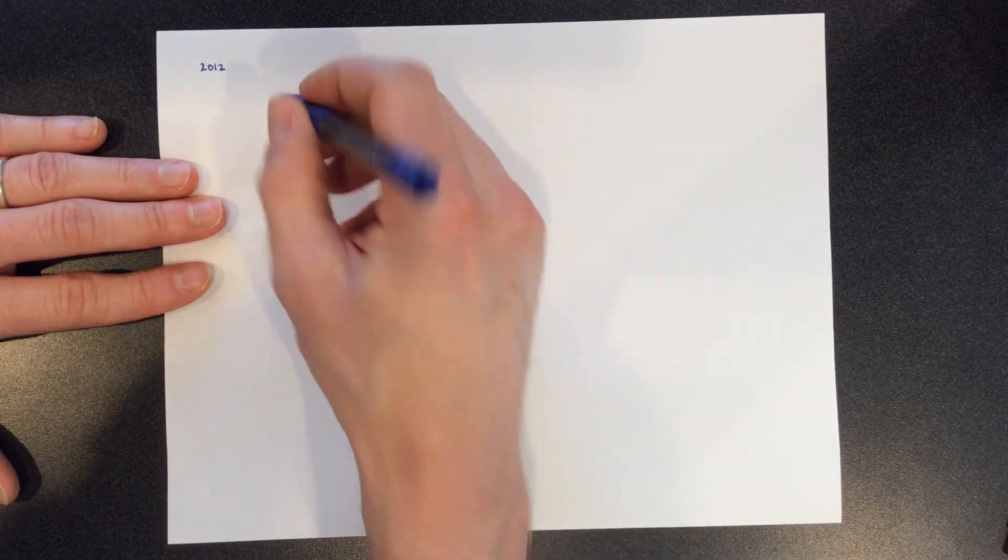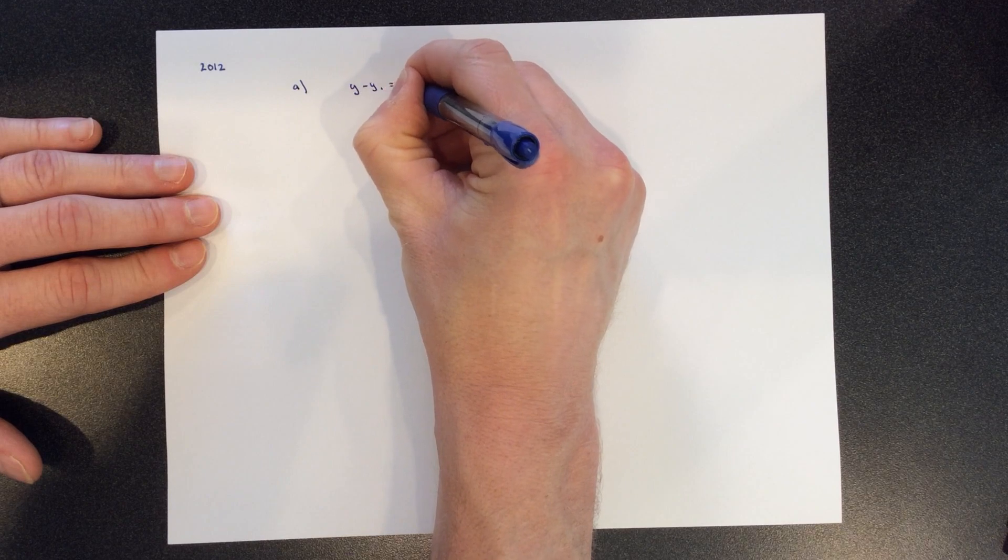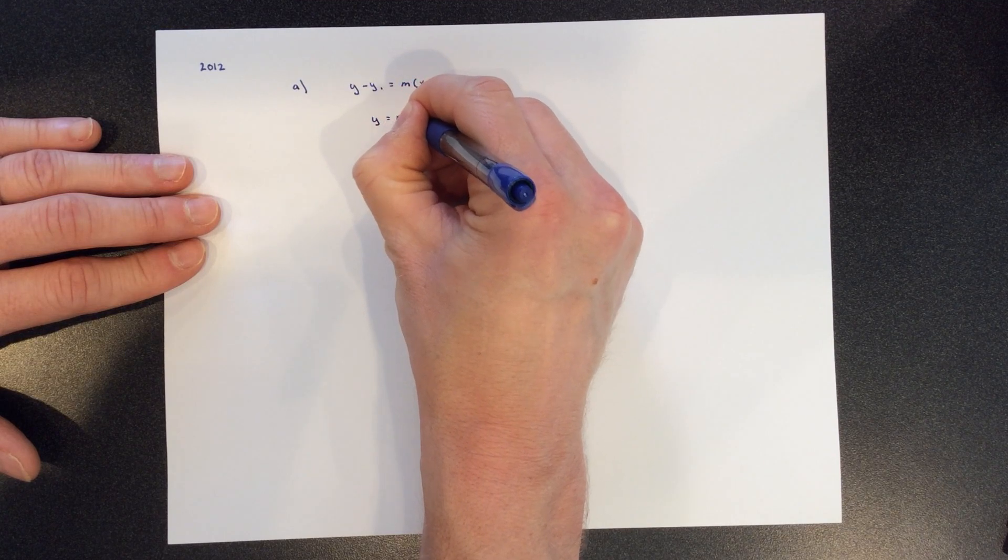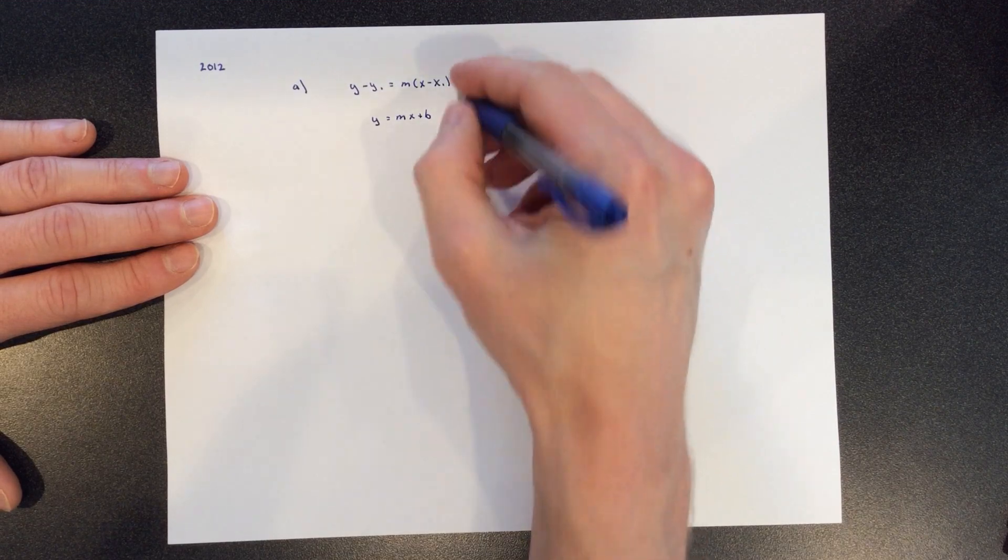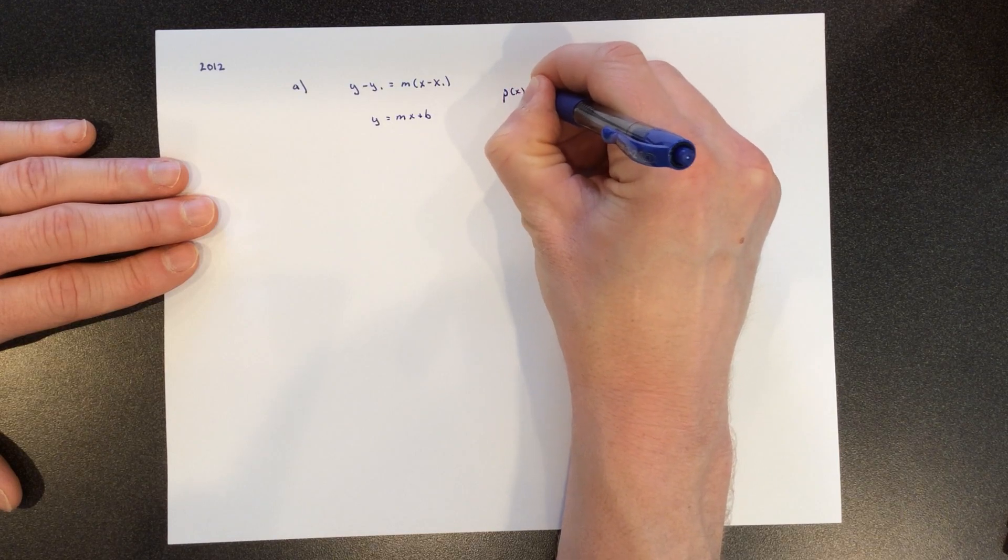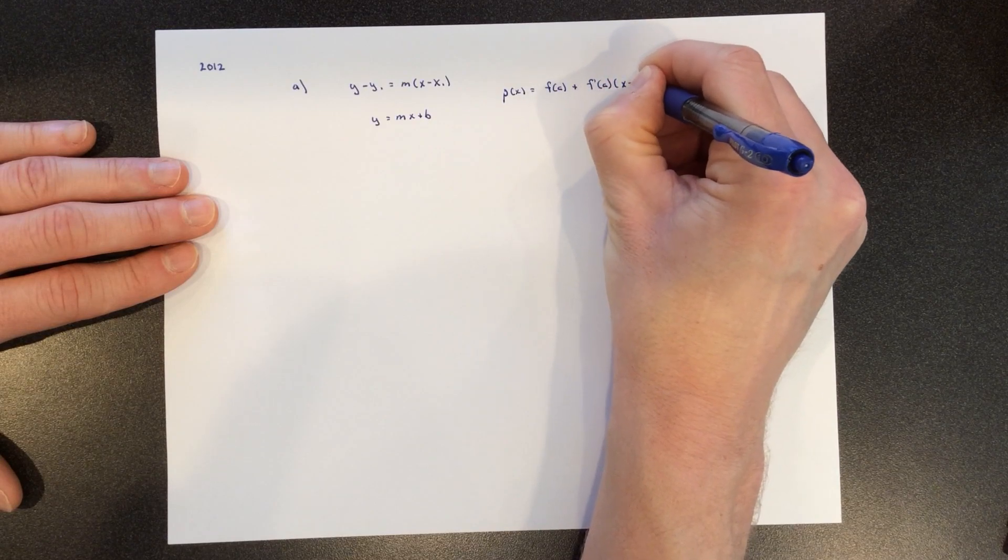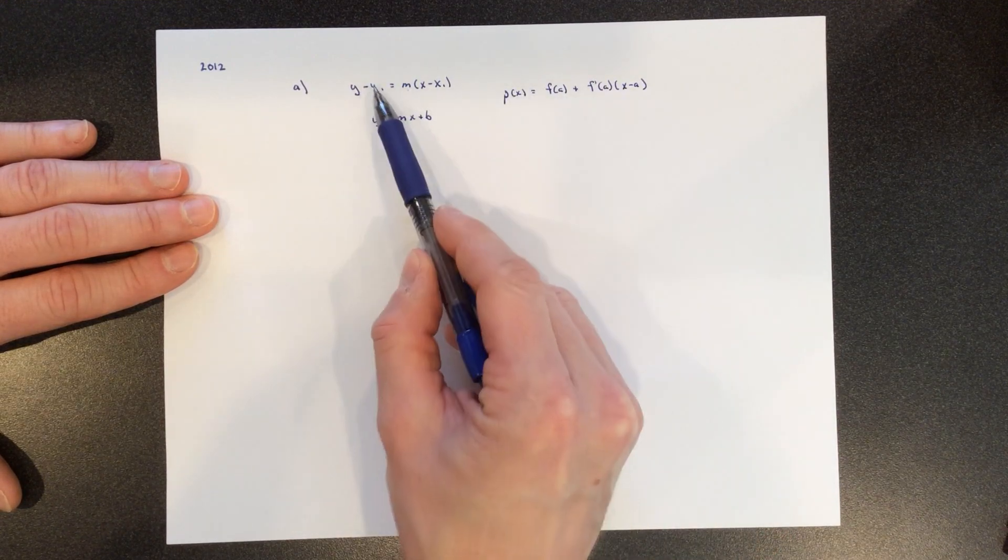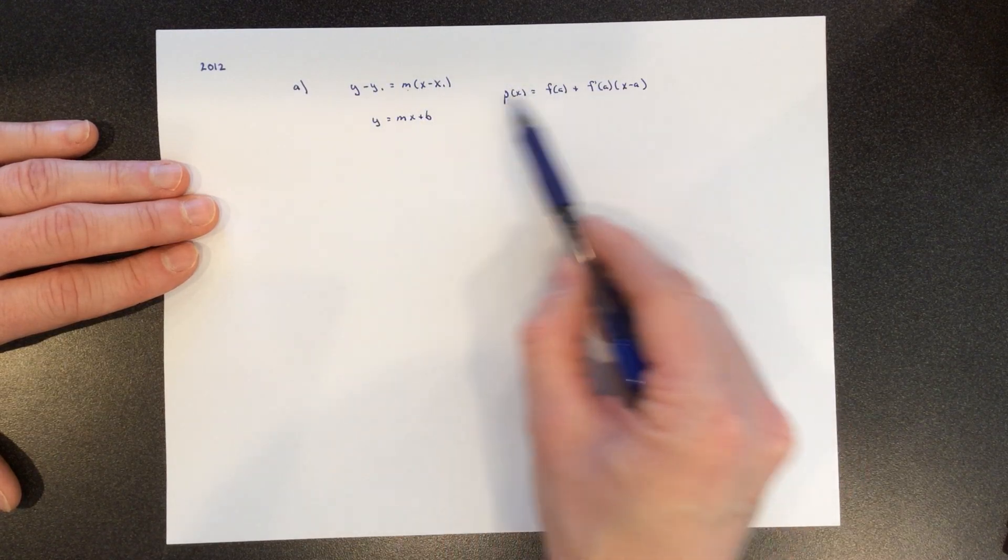Okay, so part A says write an equation for a tangent line. Just as a reminder, a tangent line old school was nothing more than point slope or y equals mx plus b. It's just a line. We now know, if you've taken some Taylor series stuff, that we know that the tangent line is the first order approximation. So we might write it like this: f of a plus f prime of a times x minus a. And I just want to remind you that these are saying the exact same thing. Literally, m is f prime, y1 is f of a, x minus a. These two are identical. This is just Taylor series notation.